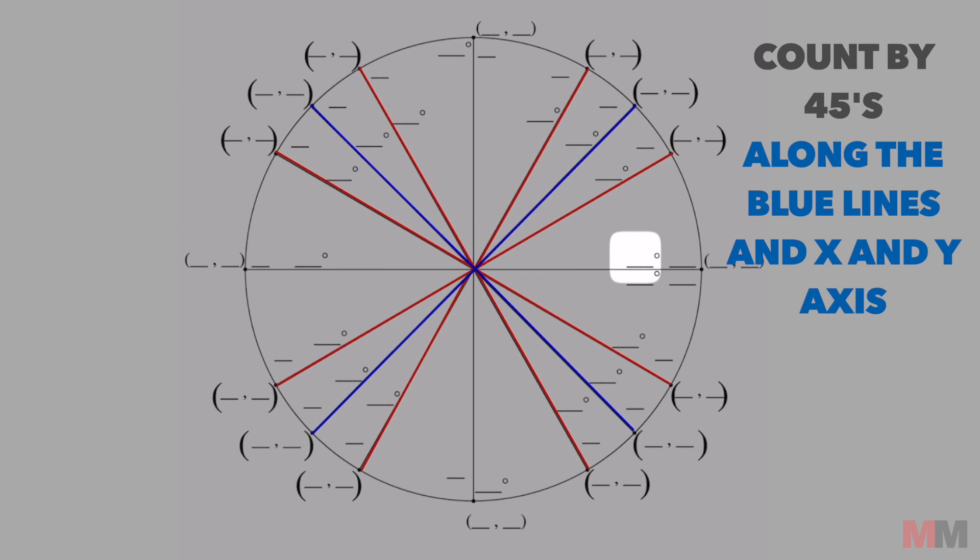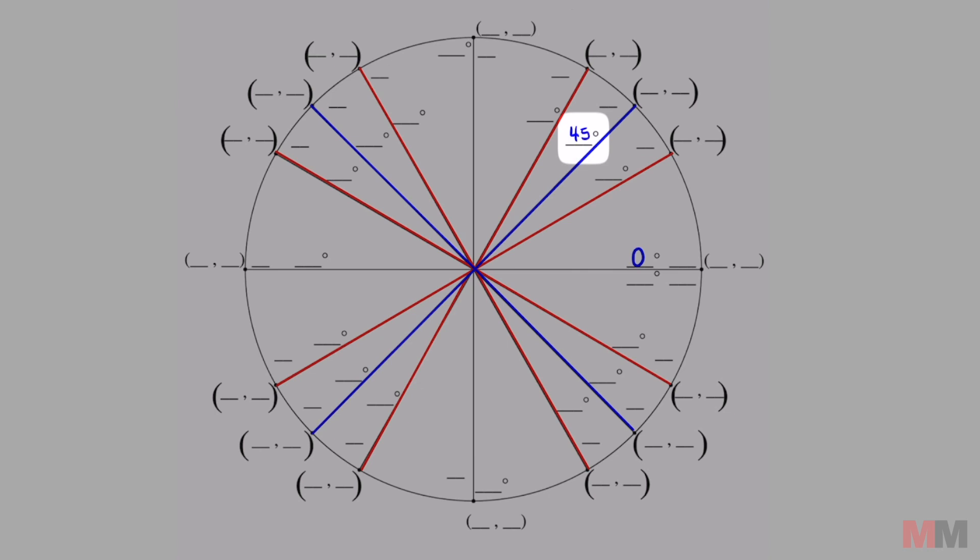Let's start at zero degrees. Anytime I pass a blue line or an x or y-axis I just need to add 45. So we're going to start with degree measurements. First blue line 45 degrees.